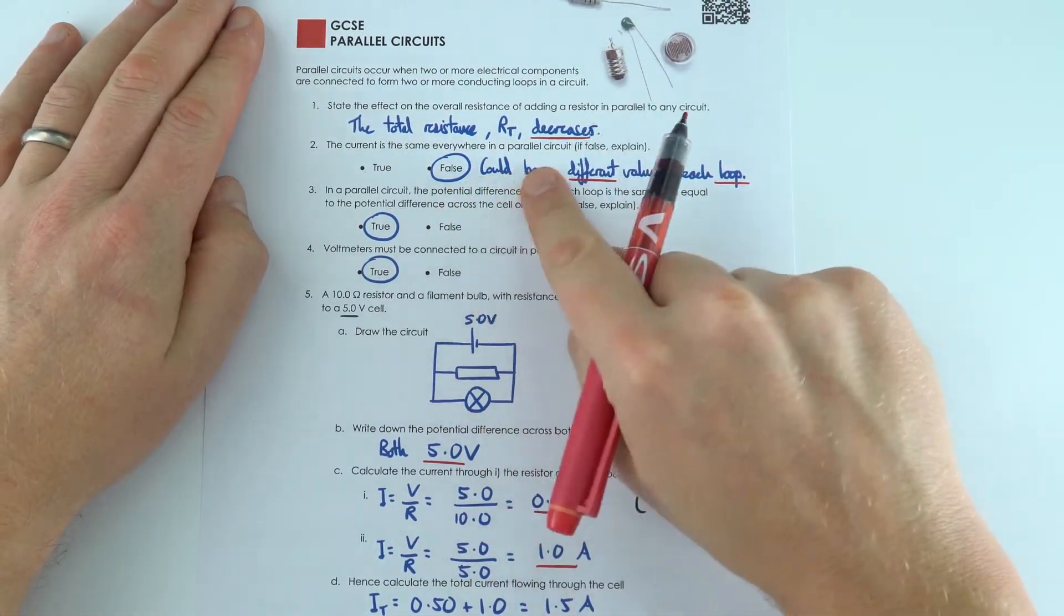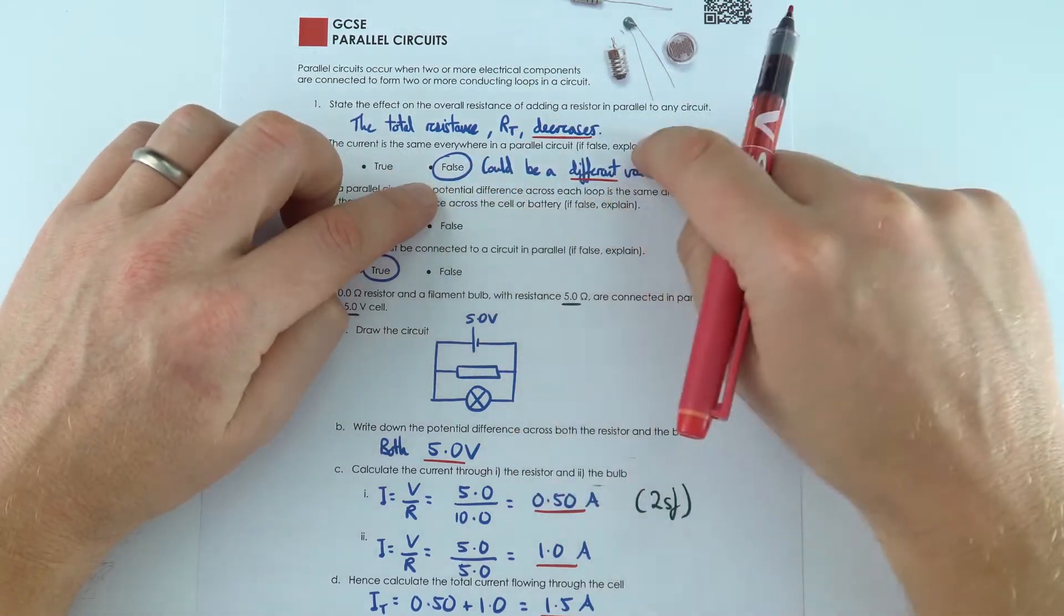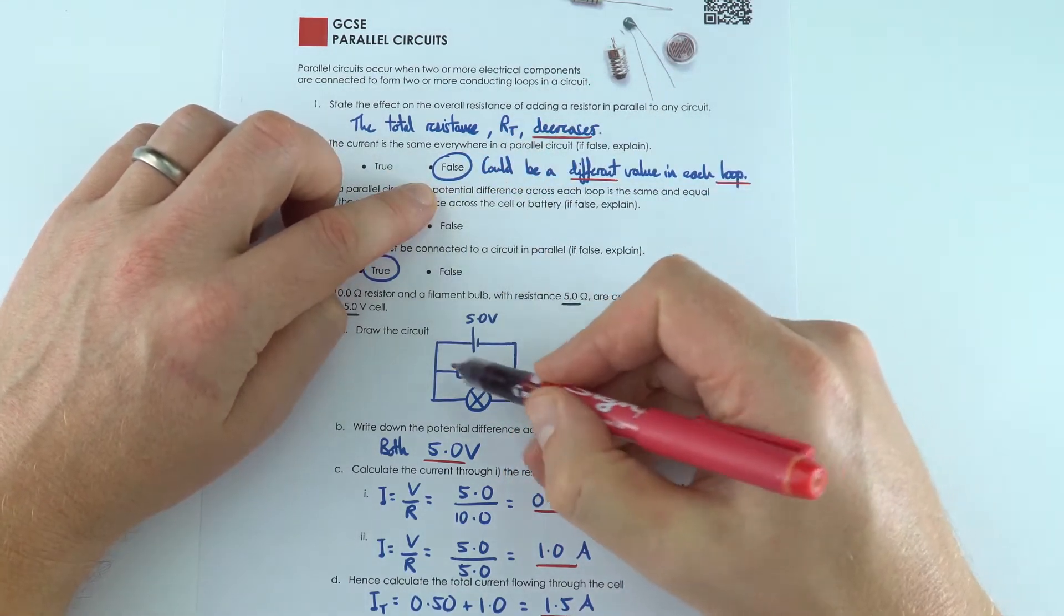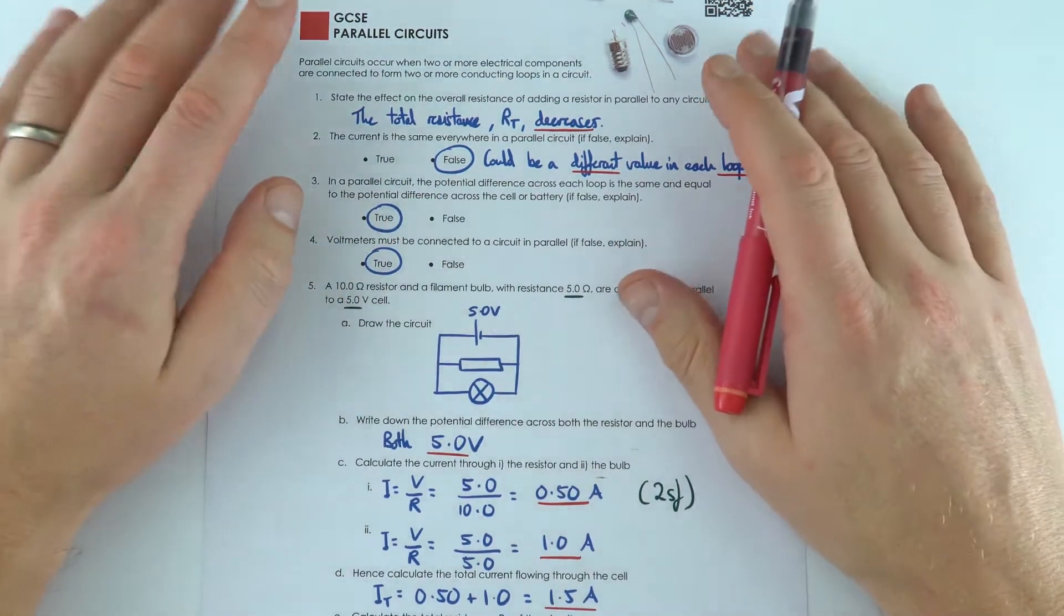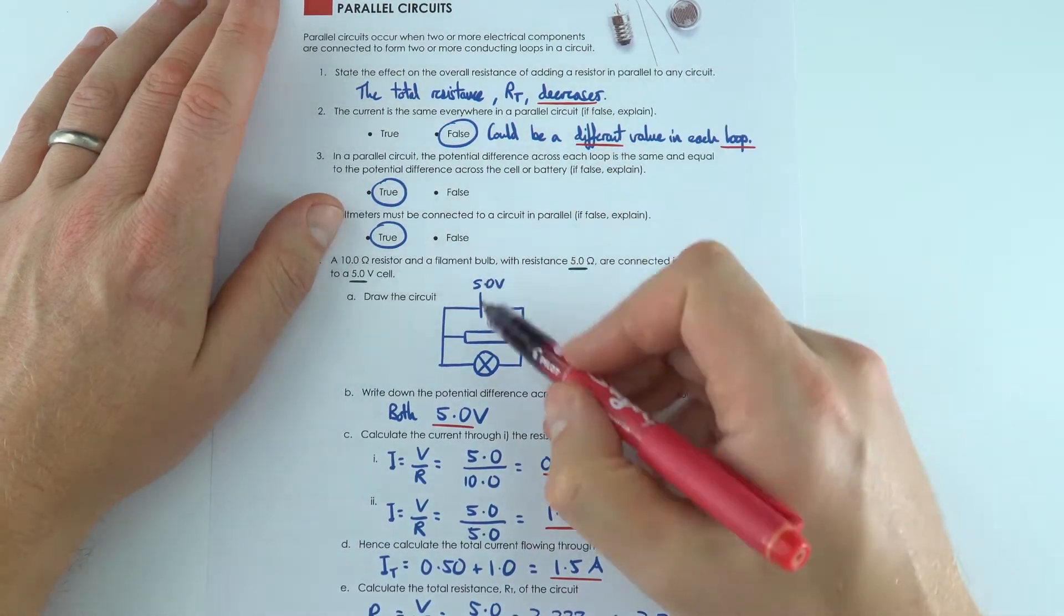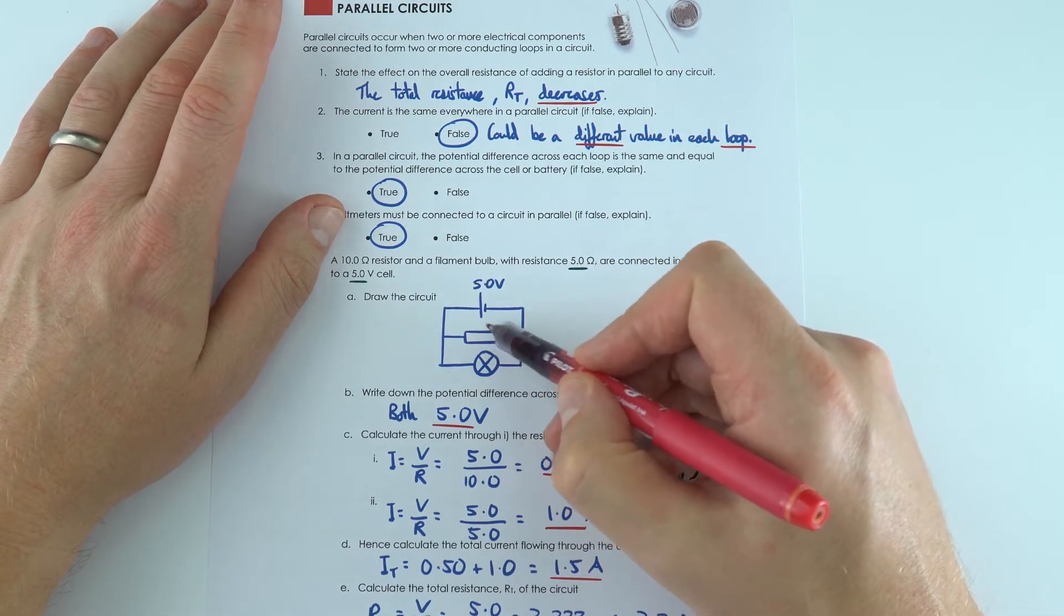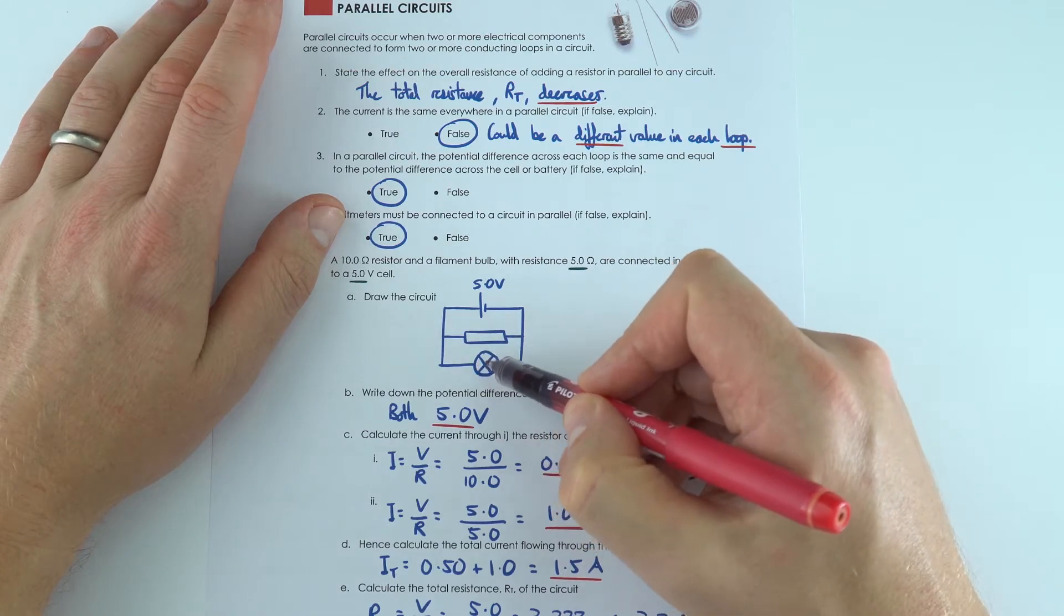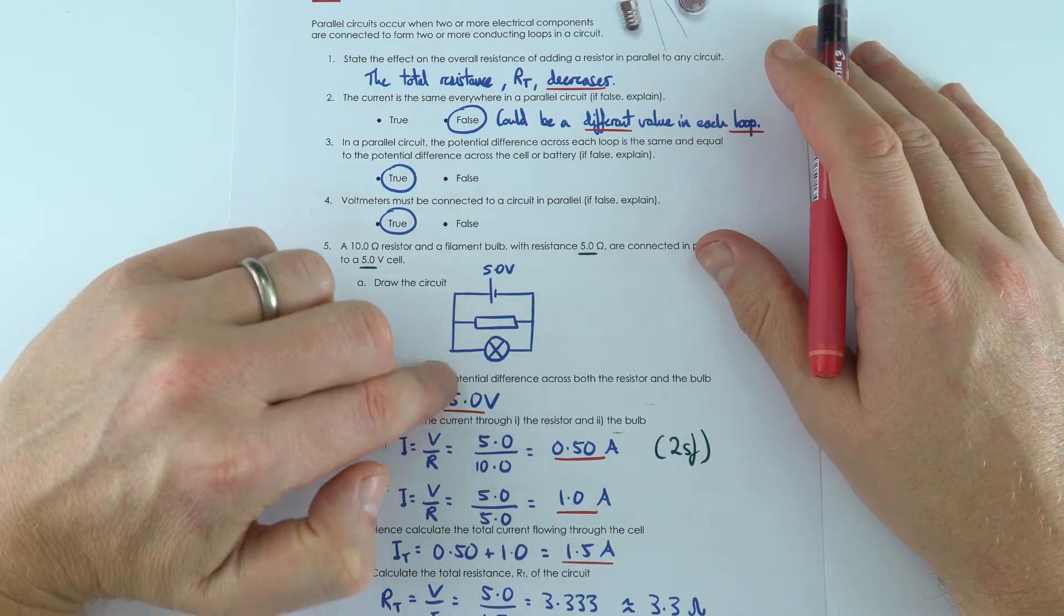So the current is not the same everywhere in a parallel circuit because in each loop there might be a different current depending on the resistance of that component. But what's really important is that across each loop you have the same potential difference. So on this one over here we'd have 5 volts across a resistor and 5 volts across that filament bulb. So that's why the answer for this is 5.